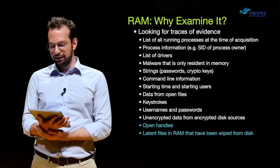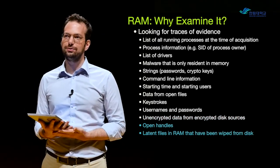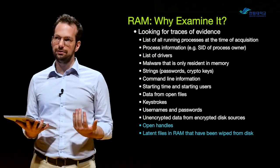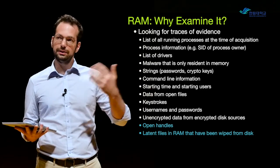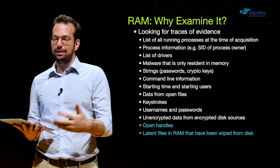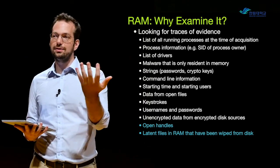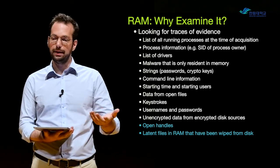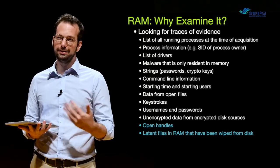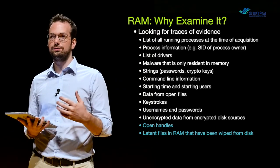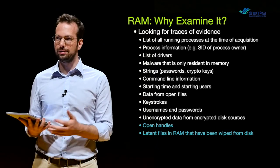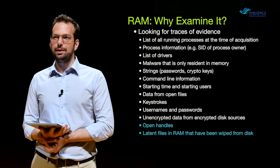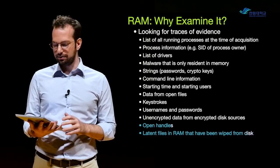Open file handles and also latent files in RAM that have been wiped from disk. Maybe someone had illegal pictures on their hard drive, opened them up, and then deleted them knowing the police were coming. Because they were opened, they're now resident in memory. When deleted from the hard drive, they're deleted only from the hard drive and not from RAM. They might be overwritten in RAM depending on how long it took, but I can still potentially recover fragments or all of the image if I have a copy of RAM.